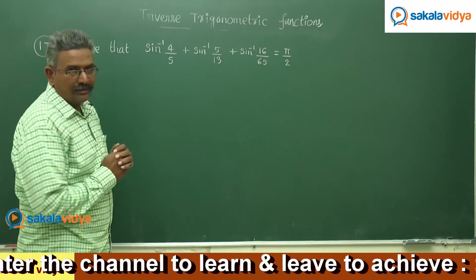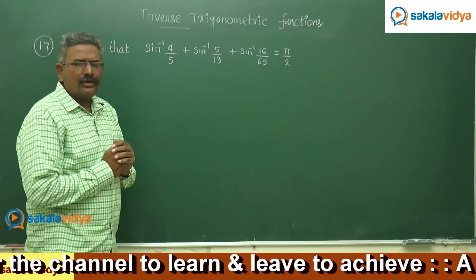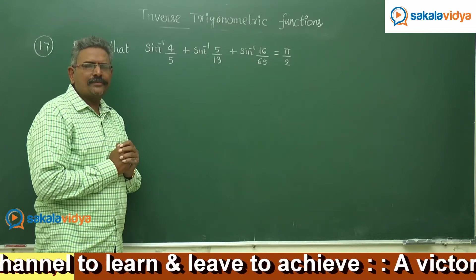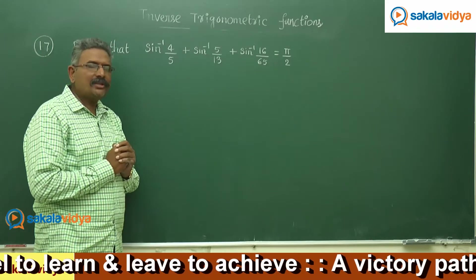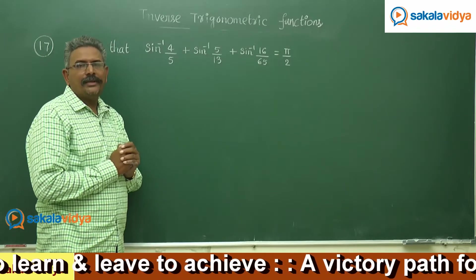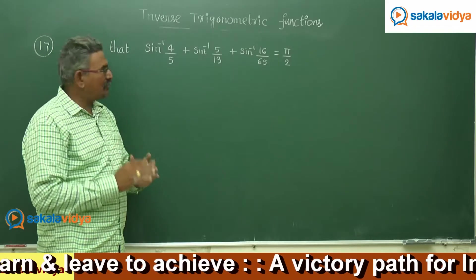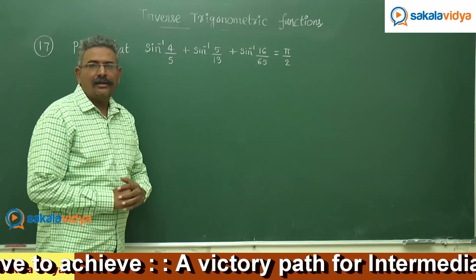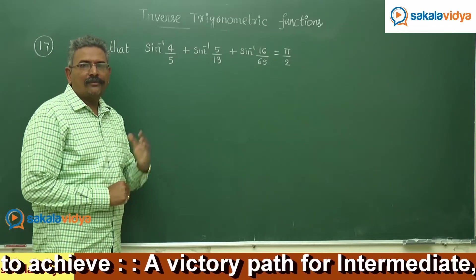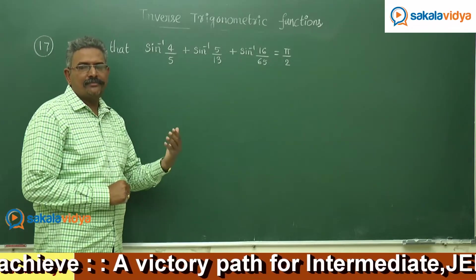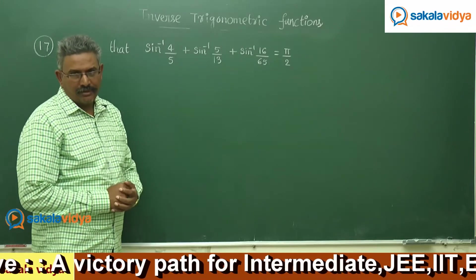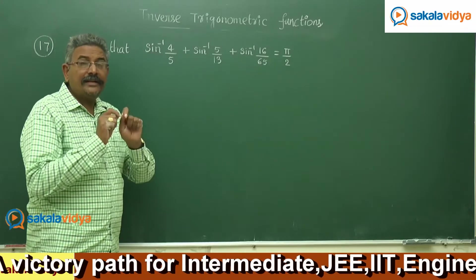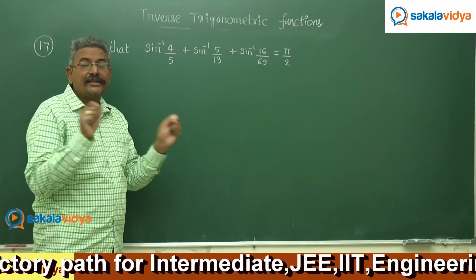What do we observe in this problem? Generally we assume this is alpha, this is beta, this is gamma, and alpha plus beta plus gamma is equal to π/2. But that becomes a very tedious problem.